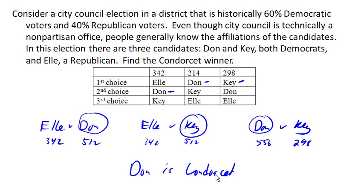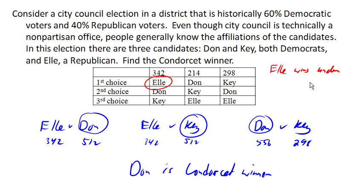Now, it's interesting to note that if this election was held under the plurality method, L would have won. So this is another example of the plurality method violating the Condorcet criterion, which says that if there's a Condorcet winner, then they should win the election.